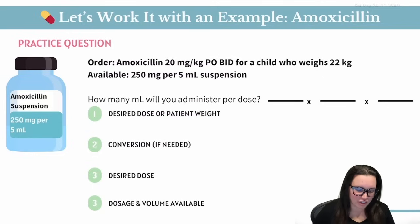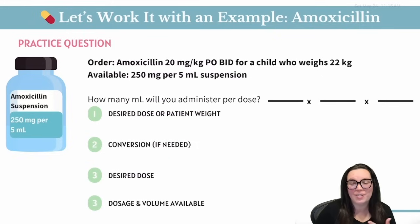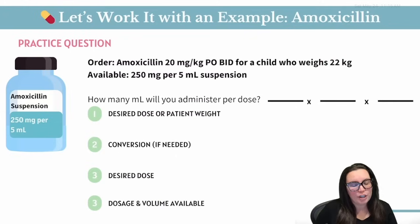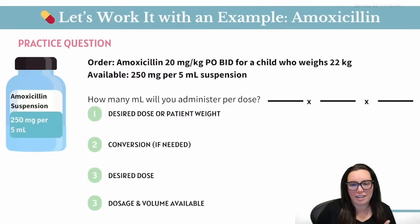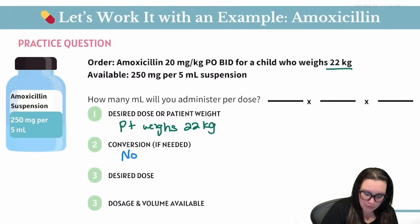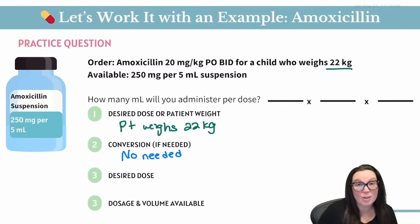Let's do our final practice question. The order says to give amoxicillin 20 milligrams per kilogram PO BID — twice daily — for a child that weighs 22 kilograms. The medication is available in 250 milligrams per 5 ml suspension. This is a weight-based dosage calculation. What's good is that our child is already in kilograms, so we don't need to convert between pounds and kilograms, which saves us an extra step.